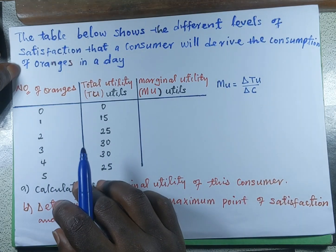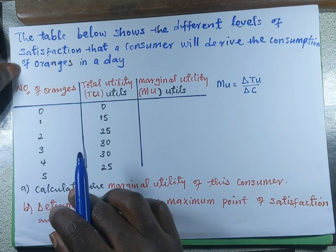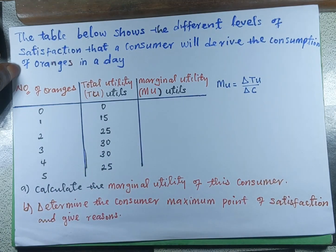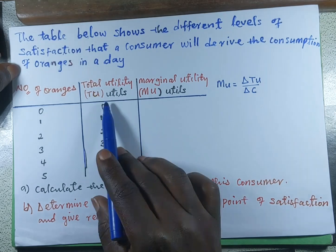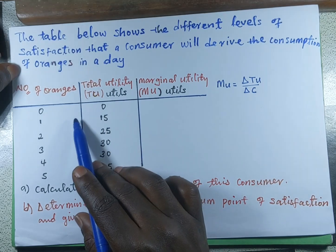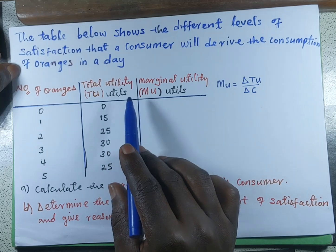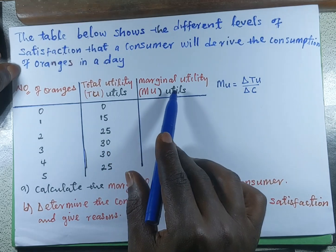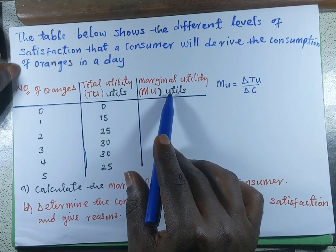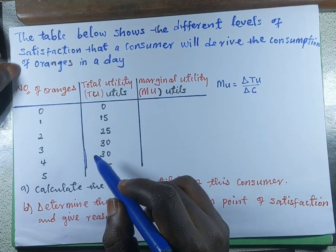Utility is the satisfaction derived from consuming a given unit of a particular good, and this utility is measured in utils. Marginal utility is also measured in utils.